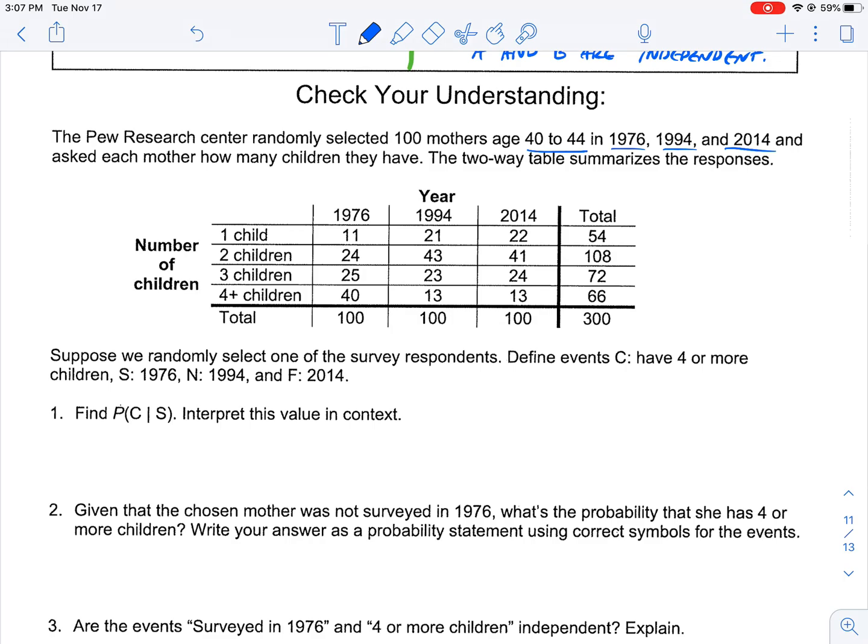Suppose we randomly select one of the survey respondents, define events C. So C is they have four or more children, S is 1976, N is 1994, and F is 2014. Good rule of thumb when you're doing probability problems: you want to define those variables because that's going to make it easier to write out, for example, probability of C given that S instead of probability of having four or more children given that you were in 1976. This is kind of a shorthand way to make things easy. So I'm going to actually write that down. Probability of C given that S is the probability of four plus children given that—remember this line means given that—it was 1976.